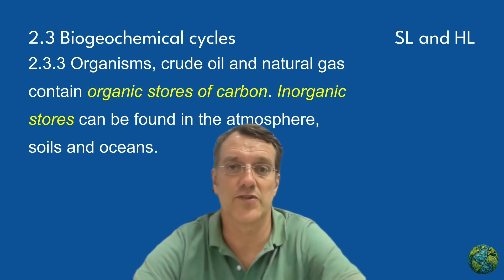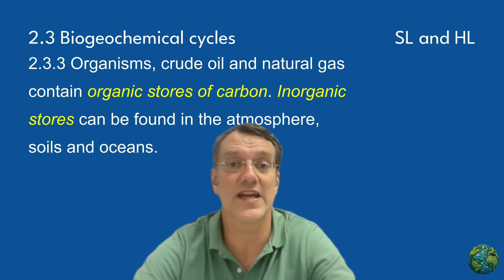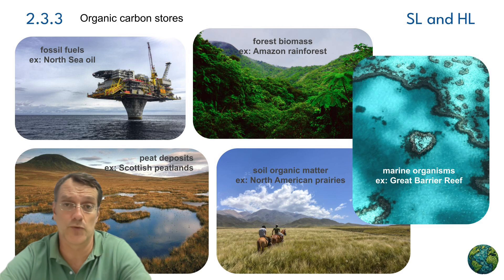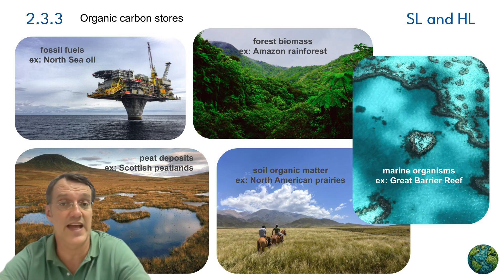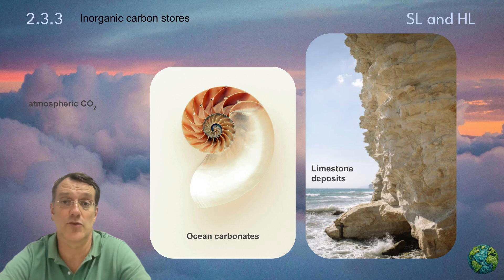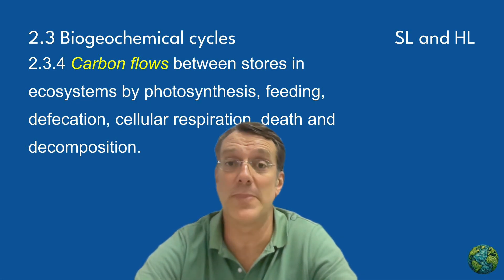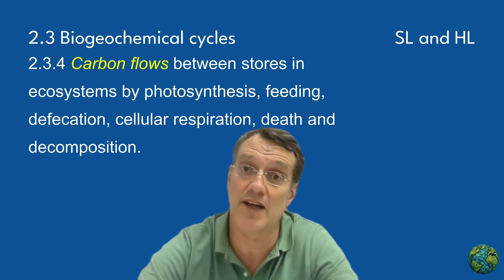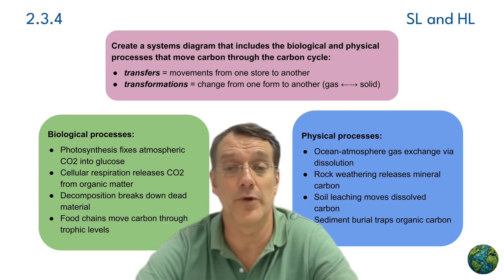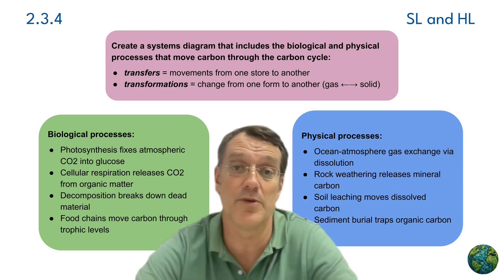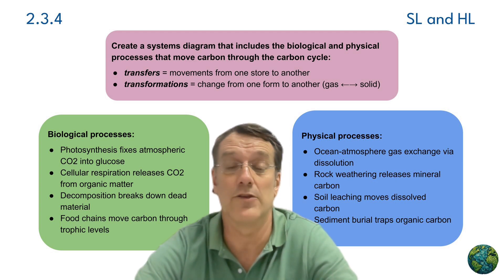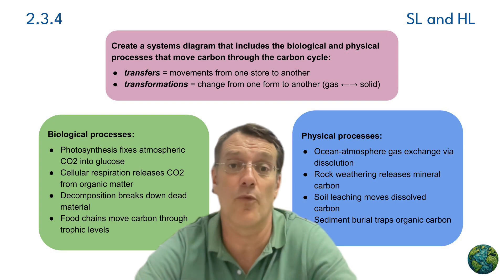Looking more closely at carbon stores, we can categorize them as either organic or inorganic. Organic stores include forest biomass, soil organic matter, marine organisms, and fossil fuels — because they were all derived from living organisms. Inorganic stores include atmospheric carbon dioxide, ocean carbonates, and limestone deposits. Carbon flows between these stores through both biological processes like photosynthesis, cellular respiration, and decomposition, and physical processes like ocean-atmosphere gas exchange and the weathering of rocks.